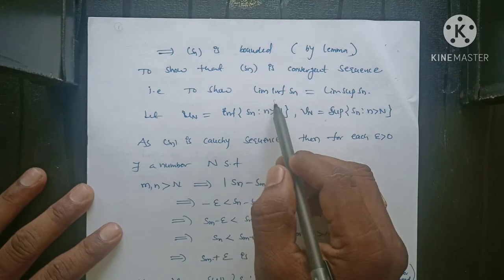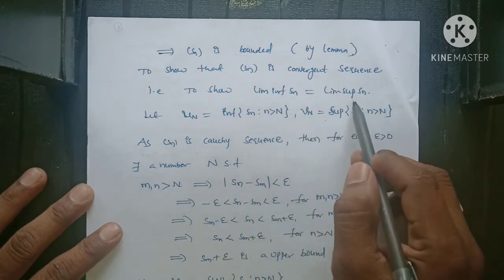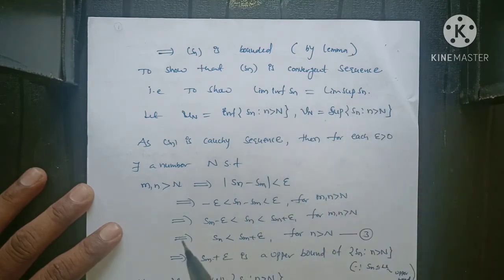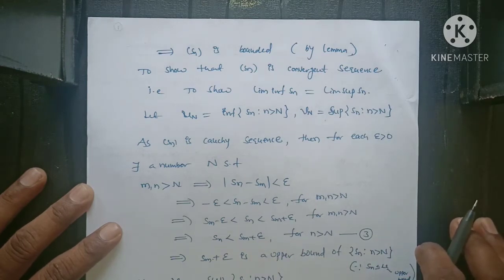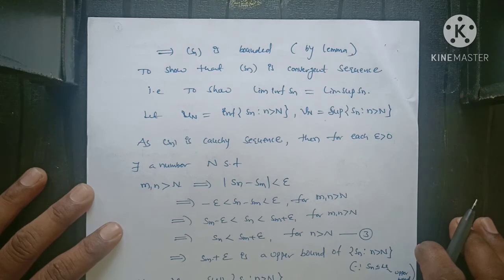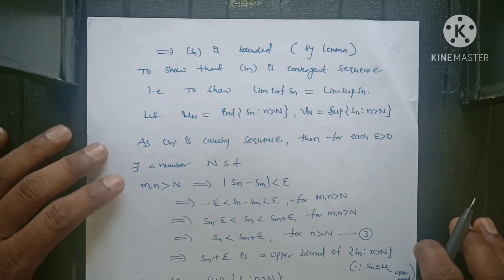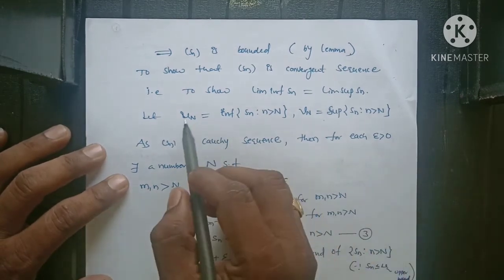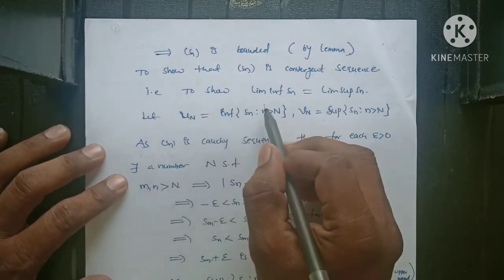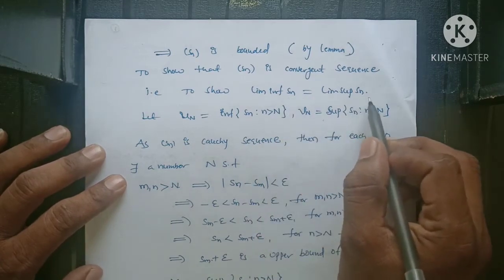We use the theorem: to show that limit inferior of Sn is equal to limit superior of Sn. If both are equal, the sequence is convergent. For example, Sn equals 1/n has limit inferior 0 and limit superior 0, so that sequence is convergent. So for this scenario, we are going to prove limit inferior of Sn is equal to limit superior of Sn.